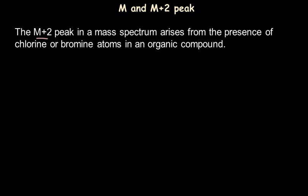The M+2 peak can arise in a mass spectrum due to the presence of an element which has an isotope with a mass difference of 2. There are two such elements with isotopes differing by 2 mass units: chlorine and bromine. So when these halogens — chlorine and bromine — are present in an organic compound, there are chances that we get peaks at both M and M+2.